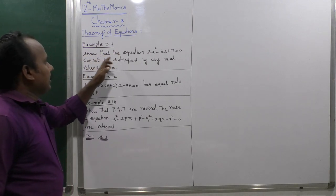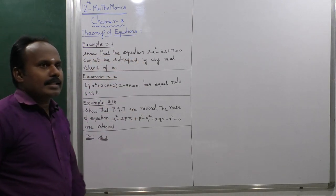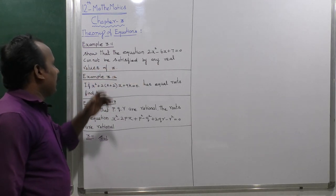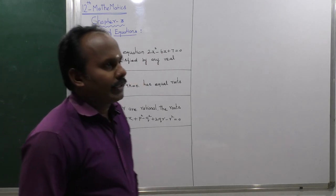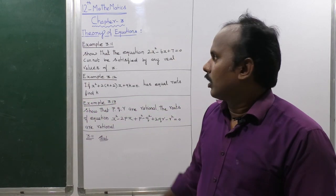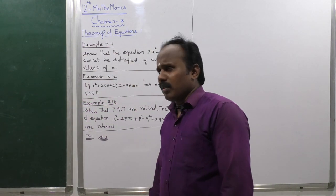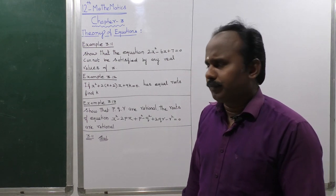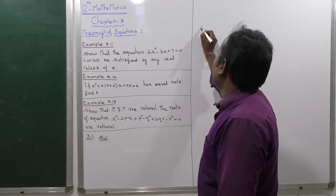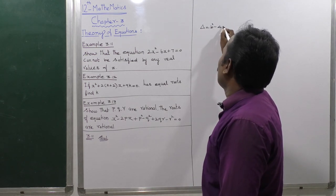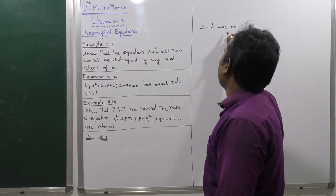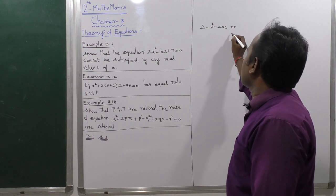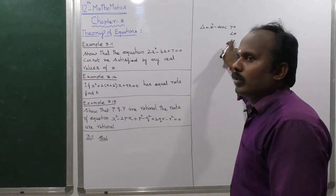Example 3.11 shows that the equation 2x squared minus 6x plus 7 cannot be satisfied by any real value of x. The formula used is the discriminant: delta equals b squared minus 4ac. If delta is greater than 0, the roots are real and distinct. If delta is less than 0, the roots are imaginary.